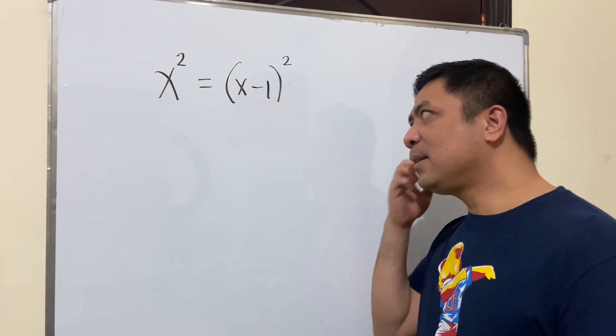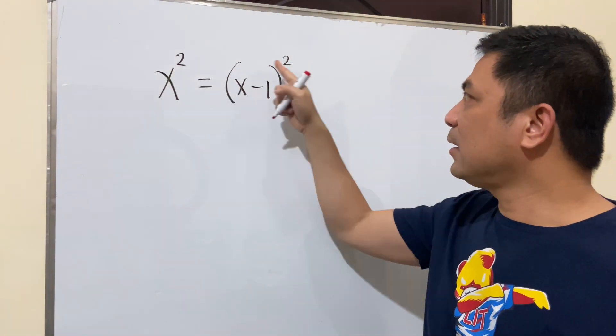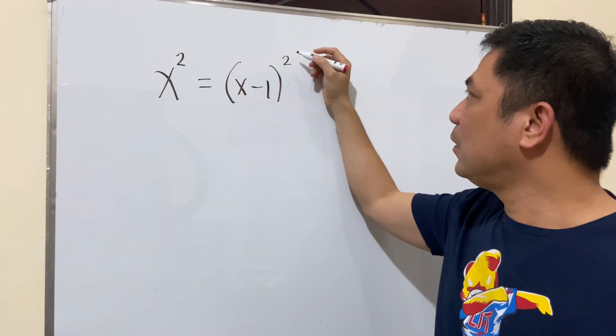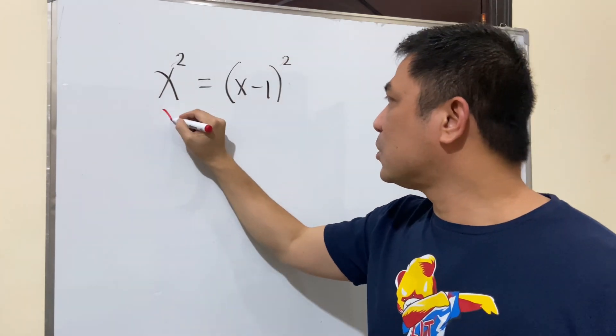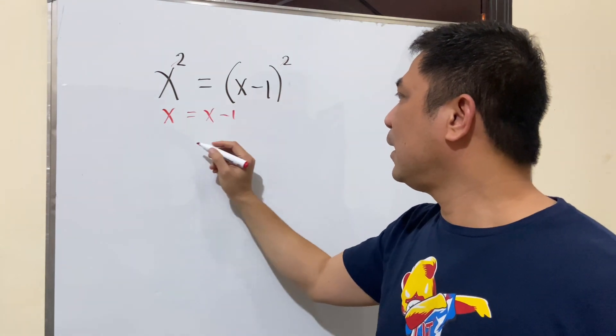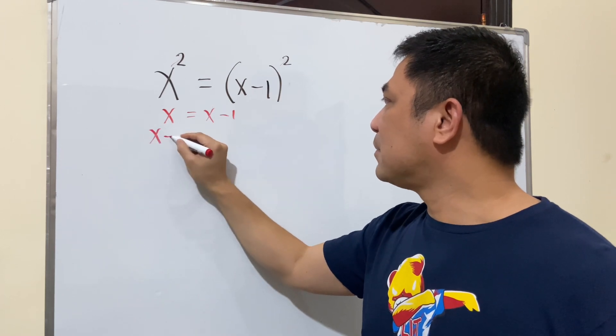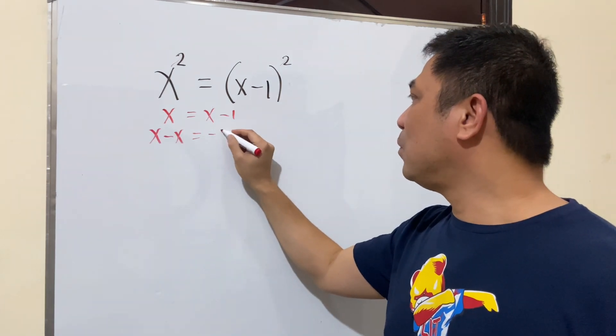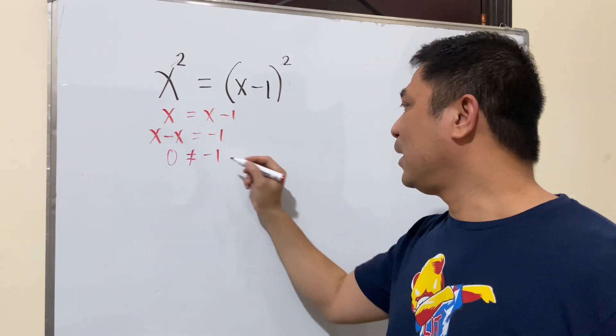Because I think the initial solution here would be like since this is square and then this is square, so what we will do is we'll cancel this, we'll cancel this. So we have the equation like x is equal to x minus 1 and then transpose this one to the other side. So x minus x is equal to negative 1. So 0 is not equal to negative 1.